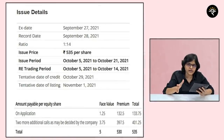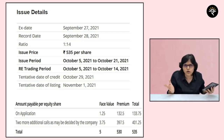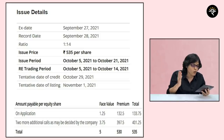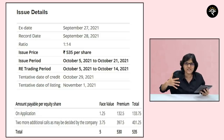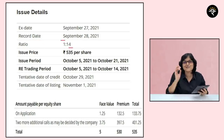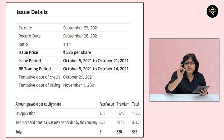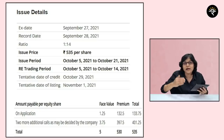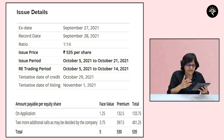The important issue details: the record date was 28th September 2021, so buying shares today would not make you eligible for right shares. The ratio is 1:14 — if you hold 14 shares in your demat account, you're entitled to one right share. The issue price is 535 rupees, which is at a discount to the current market price.